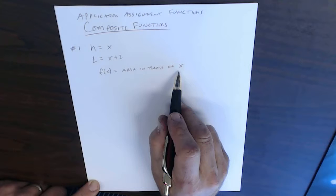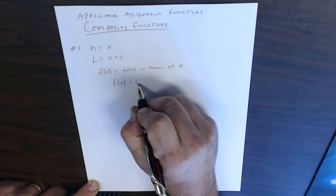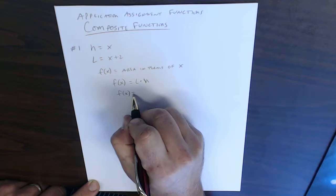We have f of x equals the area in terms of x, so f of x equals the area. To find the area multiply base times height or length times height, in this case it's l times h, so f of x equals l, which is x plus 2, and I want to multiply that times x.